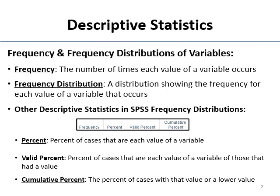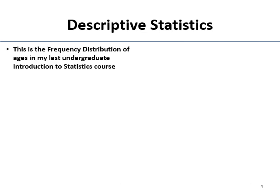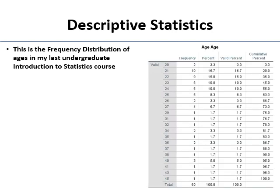This is the frequency distribution of the undergrads in my last Intro to Stats course at Sac State. What you have here are their ages — the possible values of ages that were in the class. They range from 20 to 45. Note that not every value occurred; there was no 39-year-old, for example — it just goes from 38 to 40. SPSS gives you the range of values that actually occurred, not the range of possible values. The first column is the actual frequency — so there were 10 21-year-olds, for example. It's how many folks had each value of this variable, which is age.